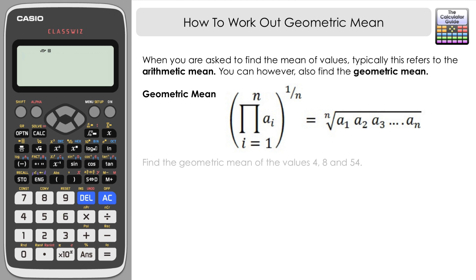So let's give this a go with this data set. We've got three values here: 4, 8 and 54. We're going to work out the geometric mean. Now unfortunately there's not a direct way to do this on the ClassWiz. There isn't a geometric mean result like there is with the arithmetic mean. But we can simply input this into calculate mode.